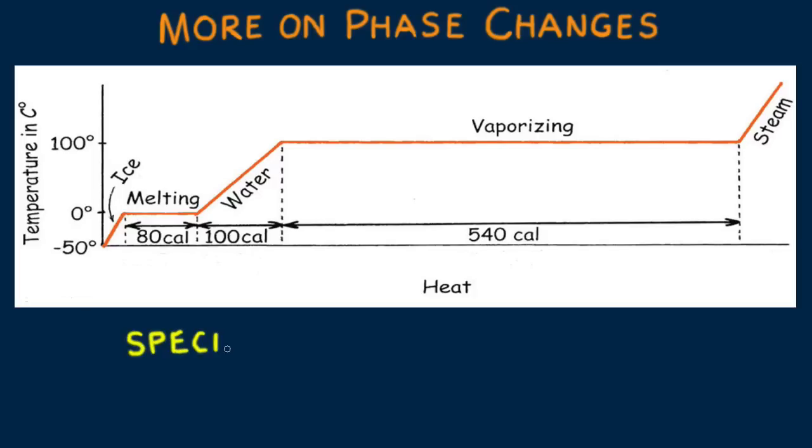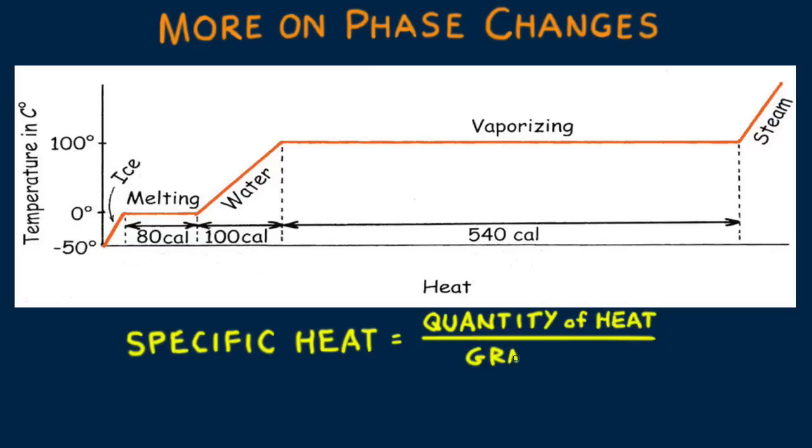Recall that specific heat is defined as the quantity of heat needed to change the temperature of one unit of mass by one degree. We'll use the letter C to denote specific heat.